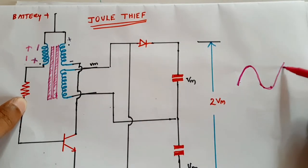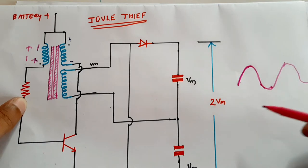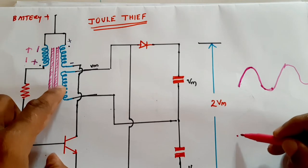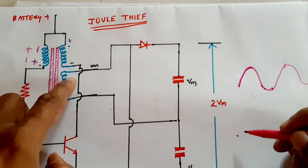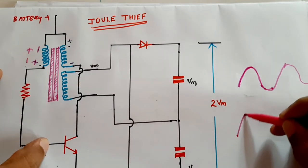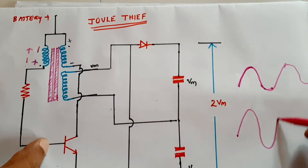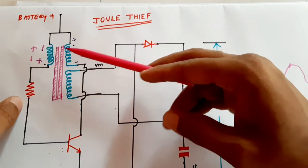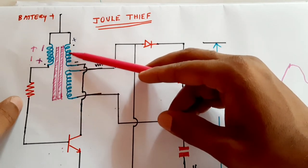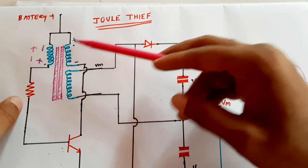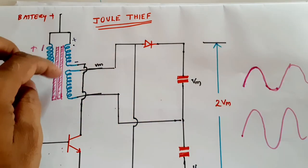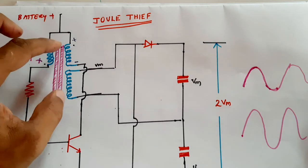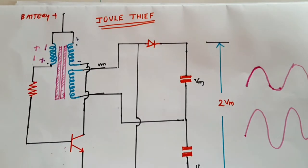The output winding has a much larger number of turns, so the voltage at that point will be very high. The frequency of oscillation is determined by the value of the inductance and the maximum flux density — the maximum flux the core can handle. It depends on these two things.